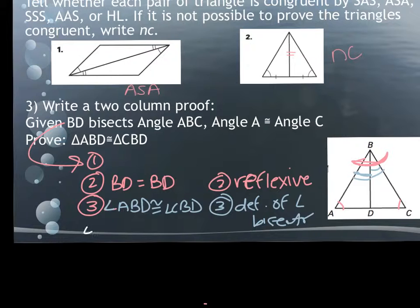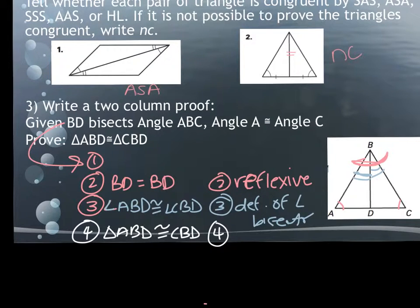Do I have enough information to prove these are congruent? Yes. So triangle ABD is congruent to triangle CBD, and the reason is angle-angle-side. How many of you got it right? If you're not raising your hands, you've got some work to do. That is not a hard one. Two and three could have been switched — the order does not matter. You don't need one to get to the other one.